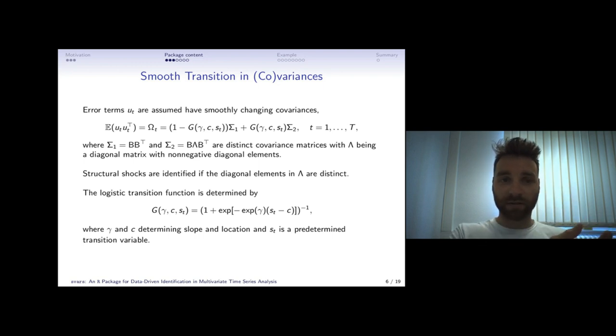In between for each observation we have a mixture of these two covariance stages. We uniquely identify these structural shocks if the structural shocks change their covariance at a different rate.